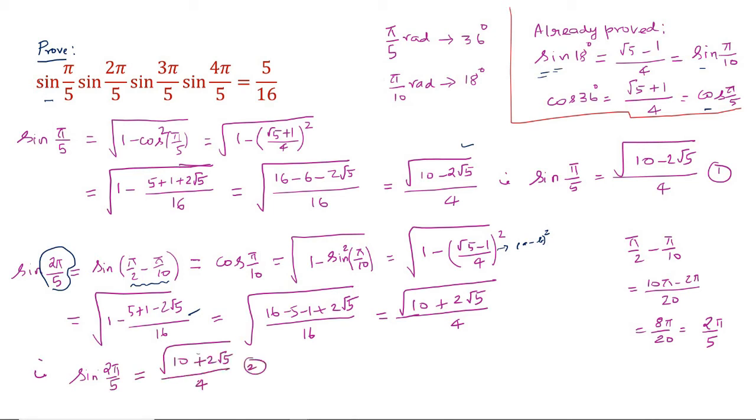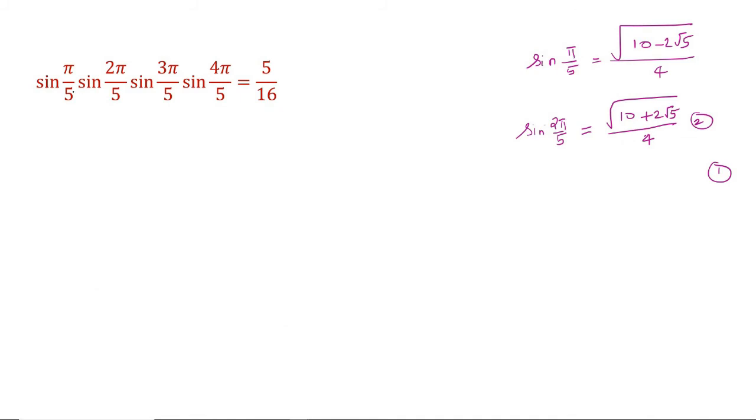So we have got sin(π/5) and sin(2π/5). Let me write it separately. We got sin(π/5) = √(10 - 2√5)/4, and sin(2π/5) = √(10 + 2√5)/4. So we have proved sin(π/5) and sin(2π/5). What about sin(3π/5) and sin(4π/5)?